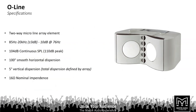It's a two-way micro line array element with a pretty substantial frequency response down to 85 Hz. From this tiny little box it'll output 104 dB continuous. One of the key factors about the O-Line series — and in fact any of our line array technology — is the 100-degree smooth horizontal dispersion achieved using acoustic loading techniques we'll cover later. Each cabinet has a five-degree vertical dispersion, and the overall array defines the maximum vertical dispersion.